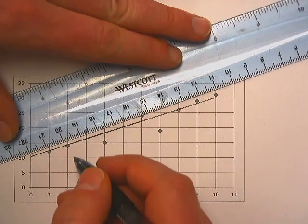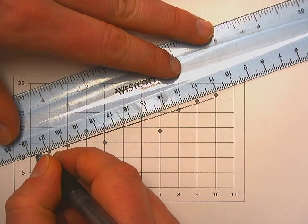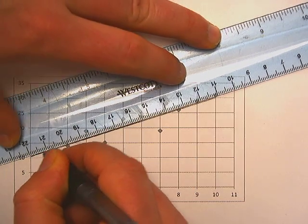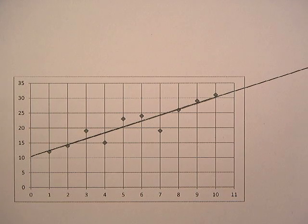The first thing we need to do is extend our trend line out further than it is given to us. I'm going to take my ruler, line it up with there, take my pen and then just put it all the way off the edge of the paper.